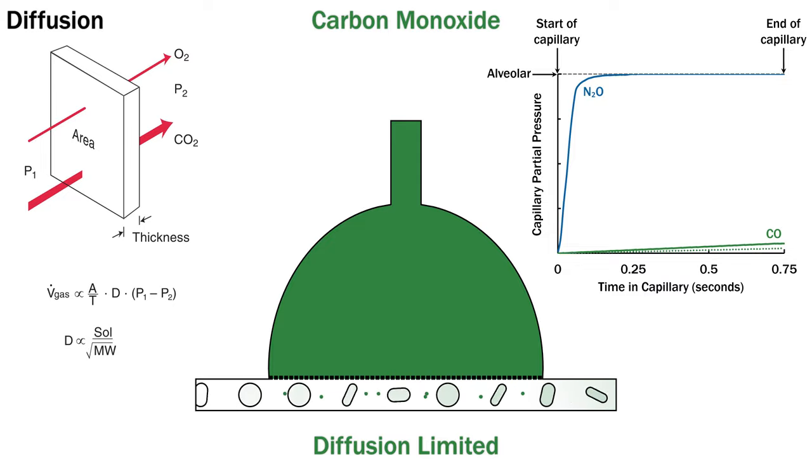For example, if you thicken the membrane, less carbon monoxide will diffuse across. This is why diffusing capacity of carbon monoxide is measured as part of pulmonary function testing.